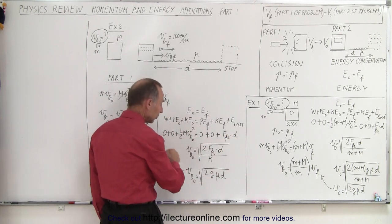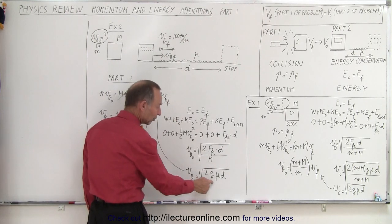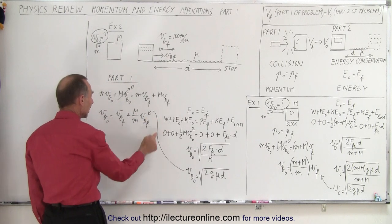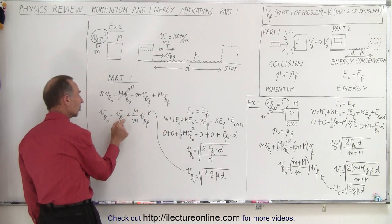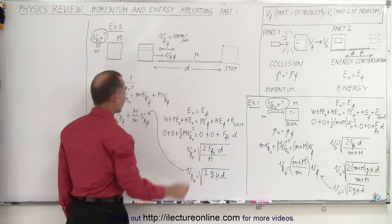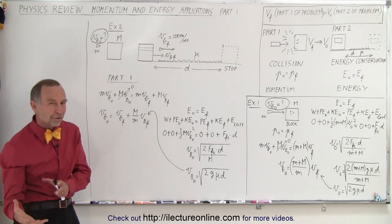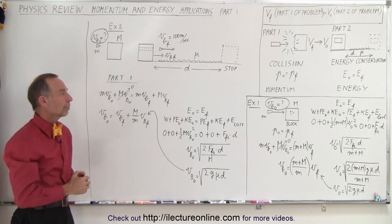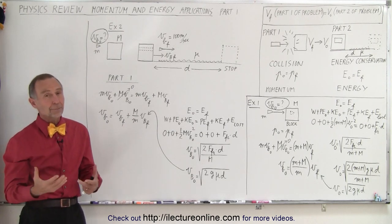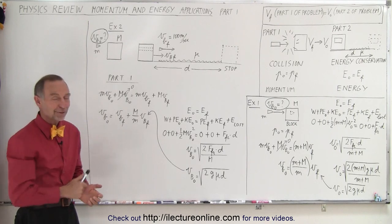If we solve this equation for v-block-initial, we get an expression, take that, plug it in to the momentum equation, and now we can solve for v-block-initial since we already know the final velocity of the block was given to us. That is how we solve a momentum-energy combination problem. We'll show you a few more examples, and then hopefully we'll get the hang of it.